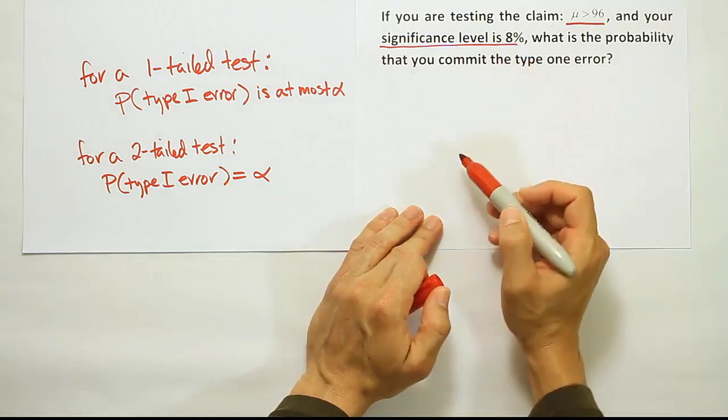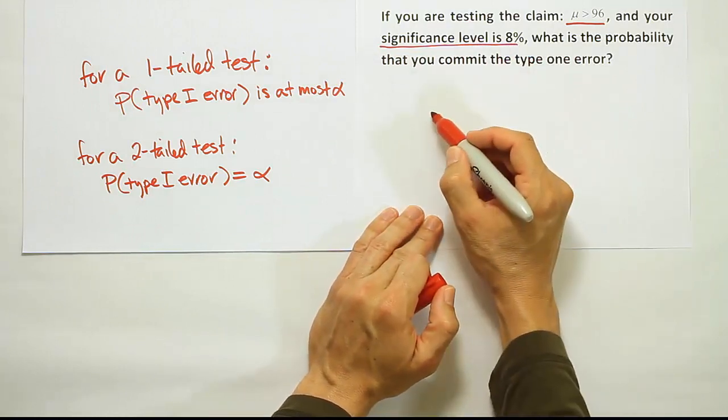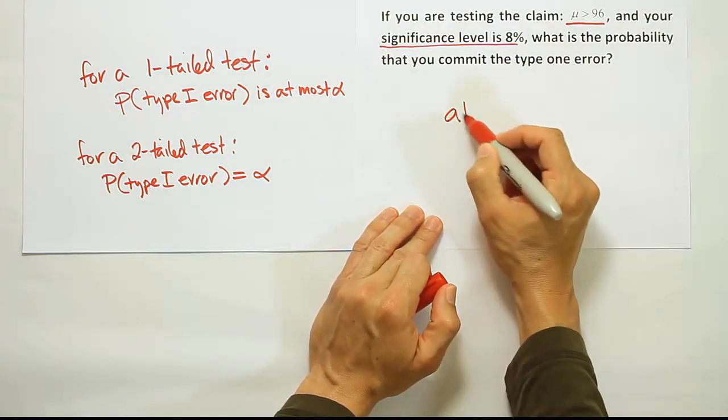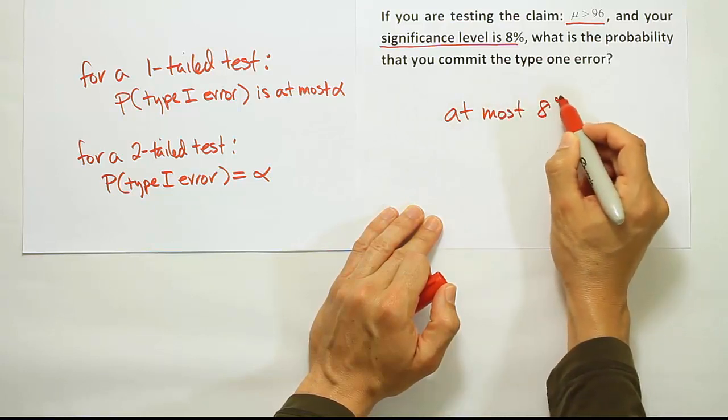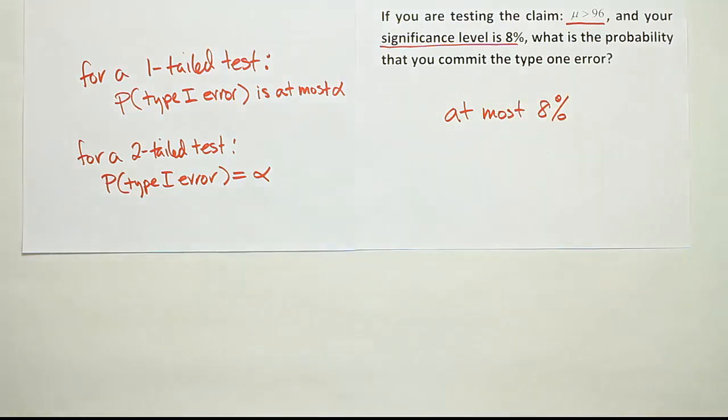Remember, significance level is the same as alpha. So the probability of a type 1 error here is at most 8%. And that's it.